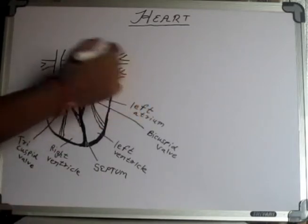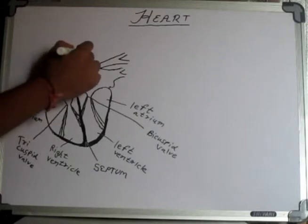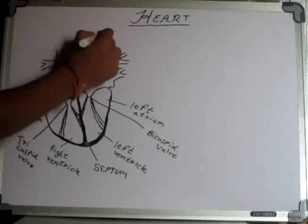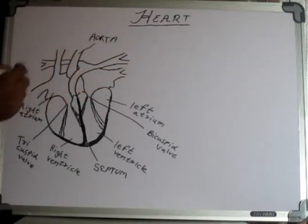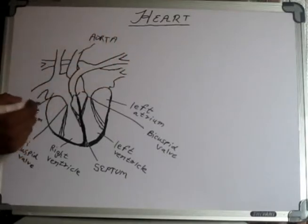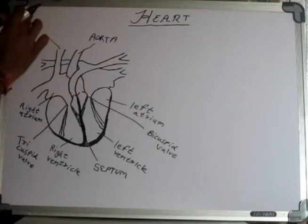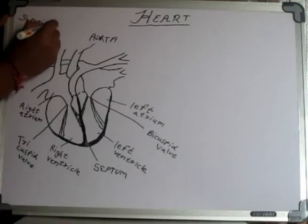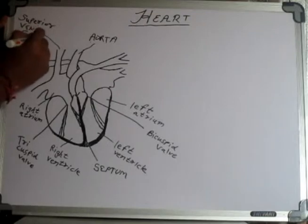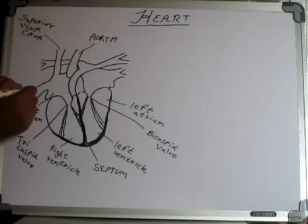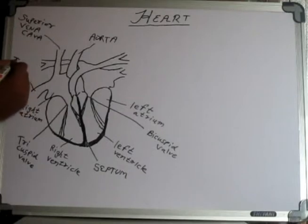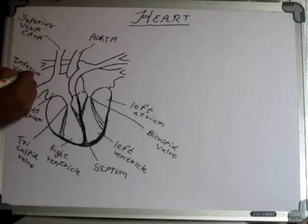Let's talk about the blood vessels. This is called the aorta, the largest artery of the body. And this is the superior vena cava, from where the deoxygenated blood enters the right atrium. This is the inferior vena cava — from here also, deoxygenated blood enters the right atrium.